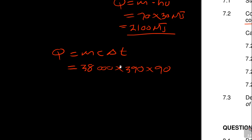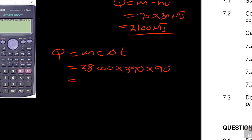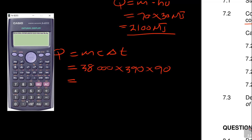So you get the answer for Q. It's 38,000 times 390 times 90.